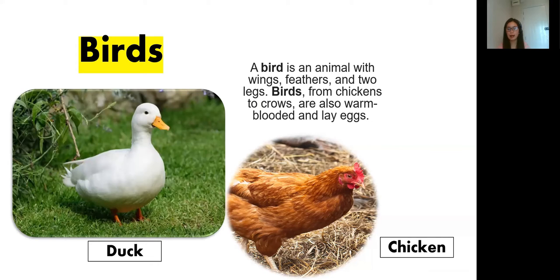A bird has feathers and two legs. Chickens and crows are also warm-blooded and lay eggs. Again, birds are animals with wings and two legs. So these are the examples of birds: the duck and the chicken. The first picture is duck, the second picture is chicken.